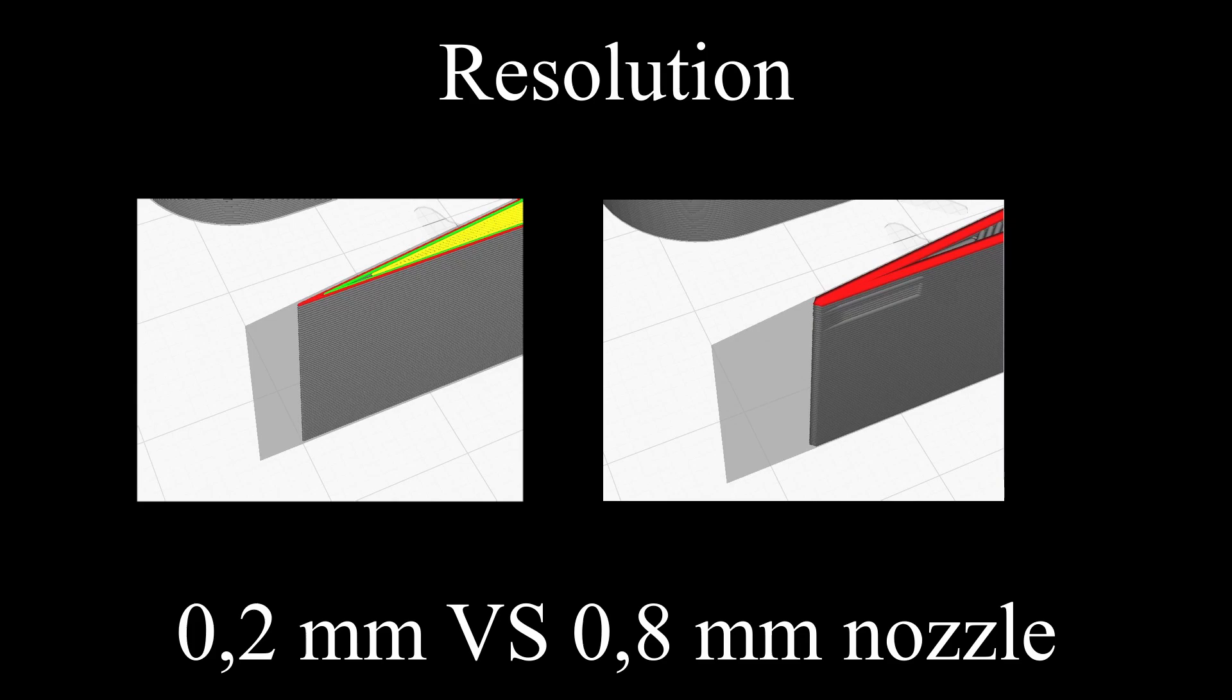At least in Cura, you can see the preview mode here, and as you can see, this thin line, the 0.8mm nozzle doesn't get as far out into the thinnest area as the 0.2 does.